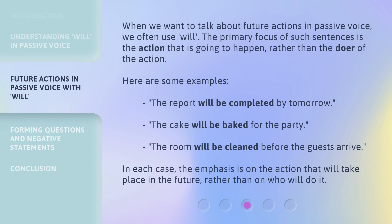When we want to talk about future actions in passive voice, we often use 'will.' The primary focus of such sentences is the action that is going to happen, rather than the doer of the action.